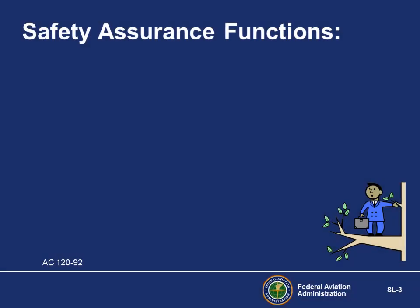How does Safety Assurance control drift and the effectiveness of risk controls? The outputs of Safety Assurance activities feed the other components of the SMS. For example, when Safety Assurance activities help identify hazards, we conduct the safety risk management process. When negative trends in safety performance are identified through audits, we correct them and share that information across the organization. When compliance issues are identified, we review their impact on policies and procedures.